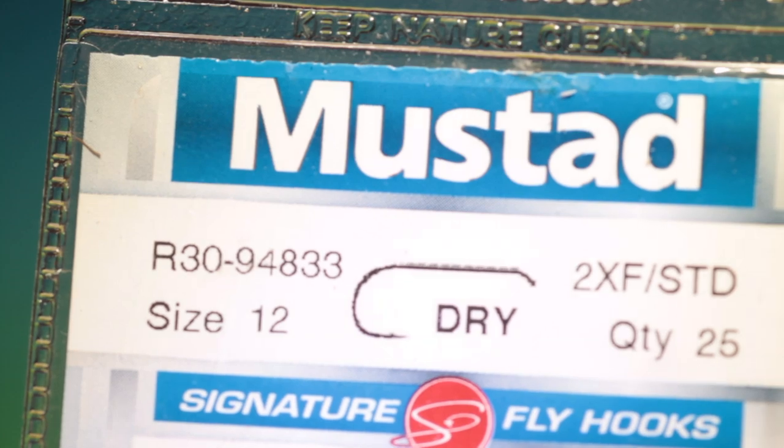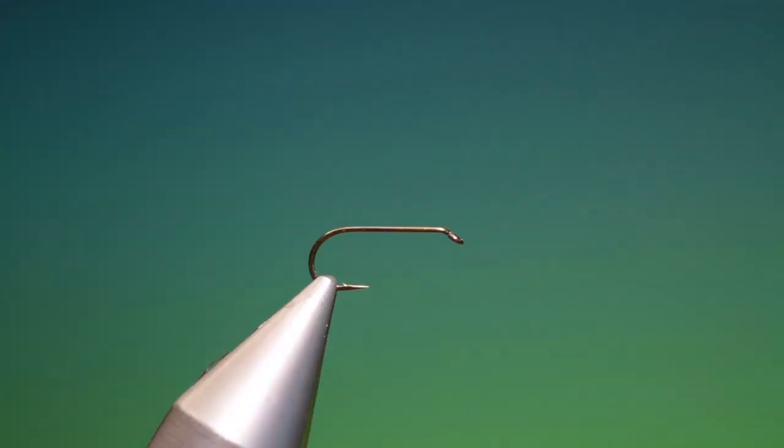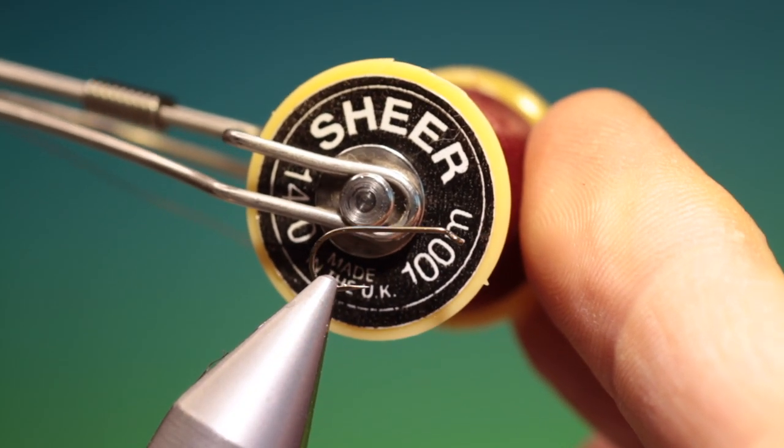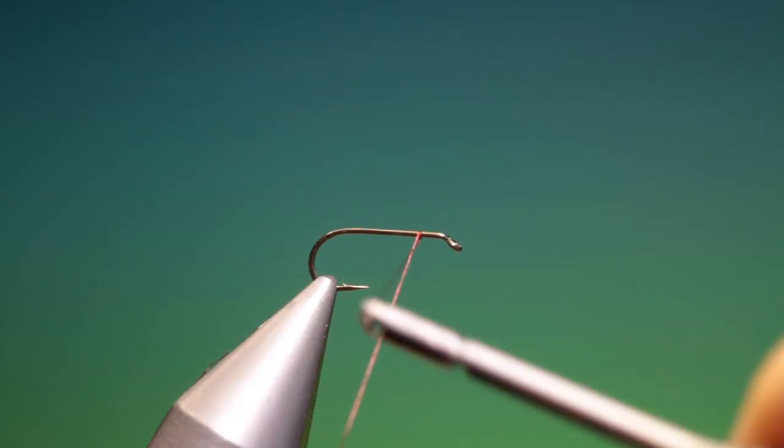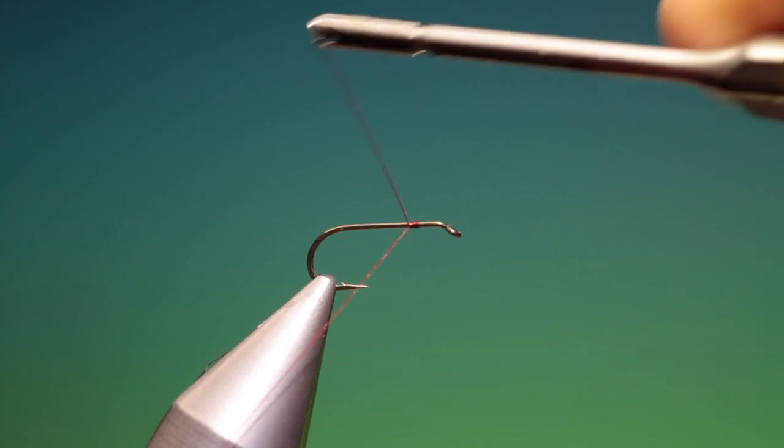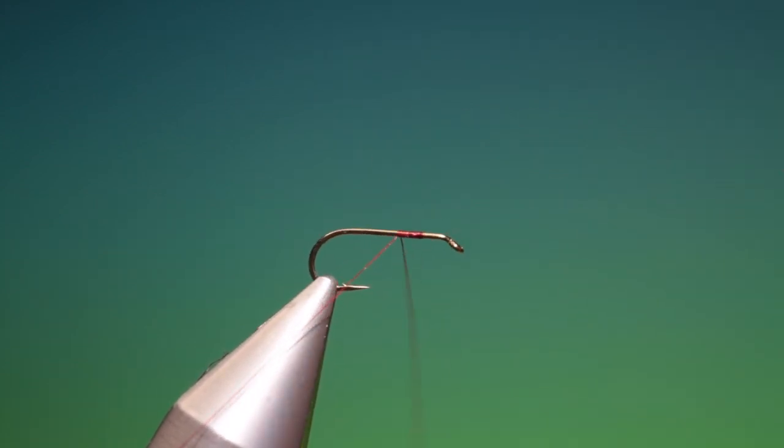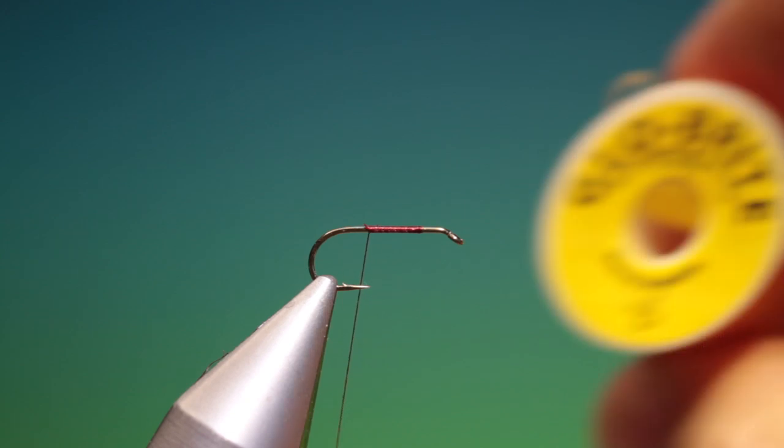We'll start with the Mustard R30 size 12 dry fly hook. We've got some Sheer 14-0 claret thread. I'll just attach this and go a ways back. This is a Hotspot Sedgehog. We'll just take that to there. Then we need some Glow Bright floss. You can choose the color yourself.